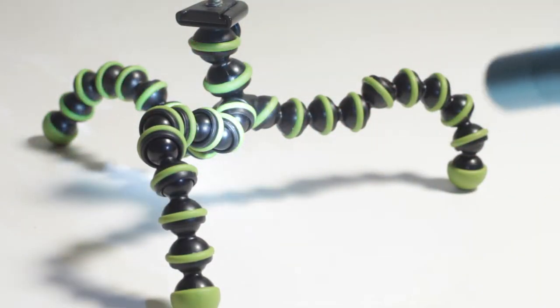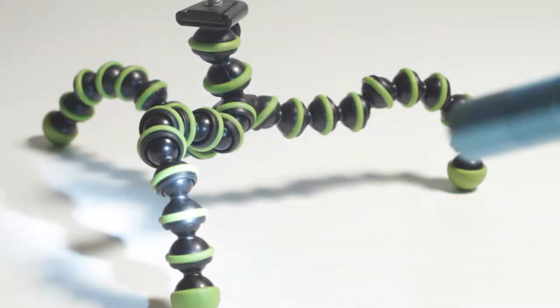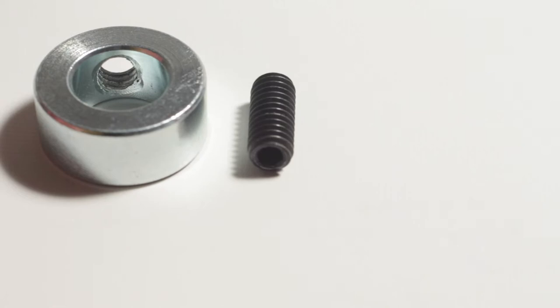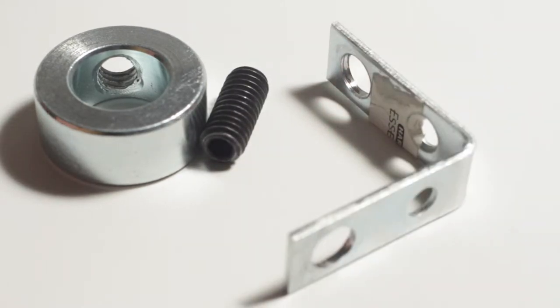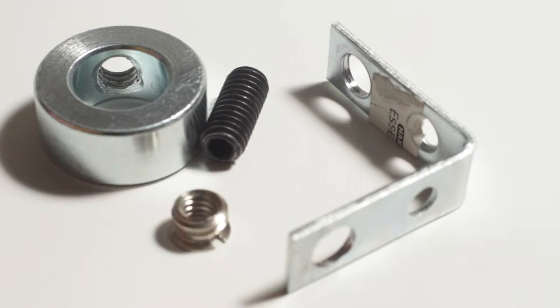So I went down to my local Ace Hardware and just bought some parts and made a cool one. Parts you're going to need are this collar, the screw that goes into the collar. This is longer than the one that comes with it. A small bracket and a couple of screws that attach everything together.